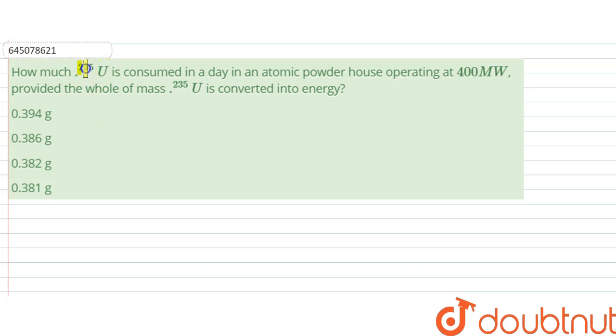Hello, we are given with a question. The question says, how much 235 uranium is consumed in a day in an atomic power house operating at 400 megawatt, provided the whole mass of 235 uranium is converted into energy? So the whole mass is getting converted.